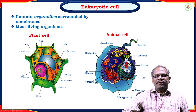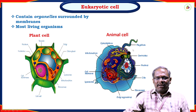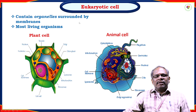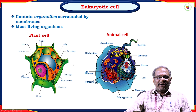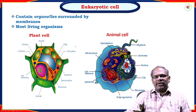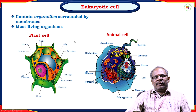Coming to the second type: the eukaryotic cell contains organelles surrounded by membranes. Most living organisms — two examples are the plant cell and the animal cell, both examples of eukaryotic cells. These are larger in size, approximately 1000 to 10,000 times as large as prokaryotic cells. They have a double membrane, contain several chromosomes, and reproduction is by both asexual and sexual reproduction.